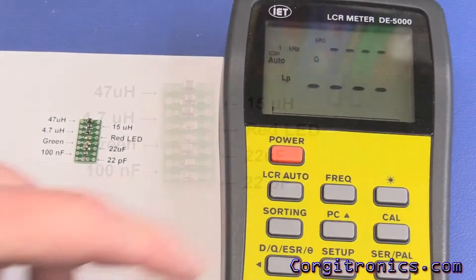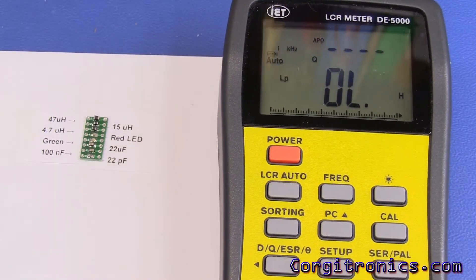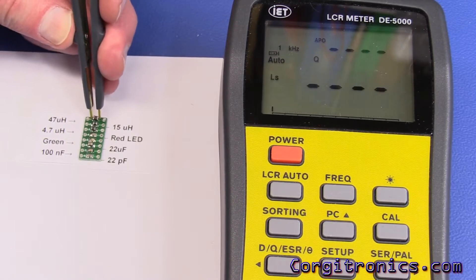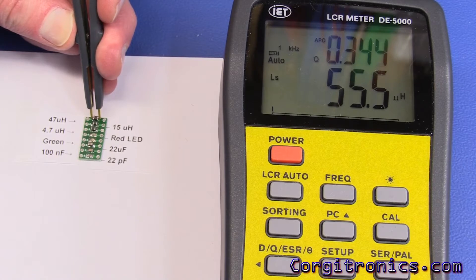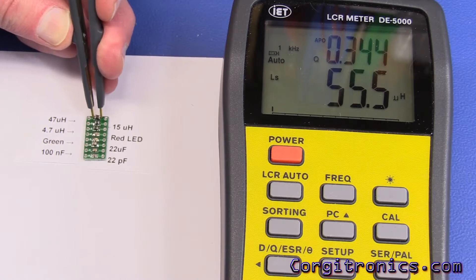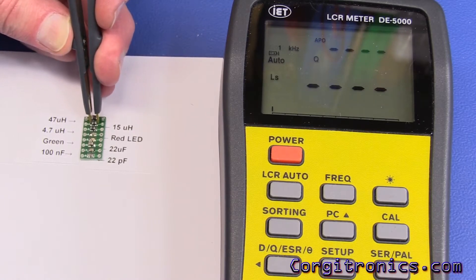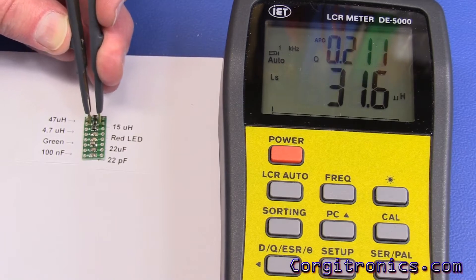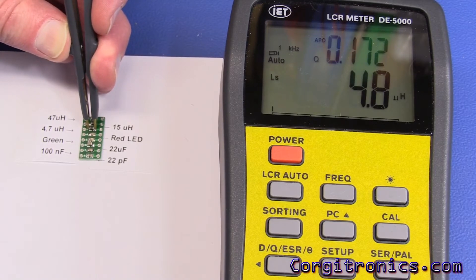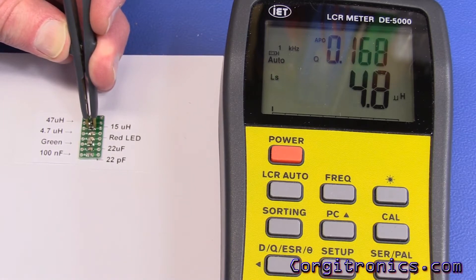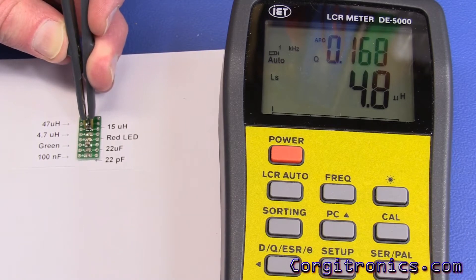We'll start with the inductors. This should be a 47 micro Henry inductor and it comes out a little high, not a surprise, 55.5. The next should be a 15 micro Henry, here we go, 15.6. I'm running these at one kilohertz, which is a pretty common test frequency, especially for the cheaper LCR meters. Then 4.7 micro Henrys, and that comes out as 4.8 on the LCR.